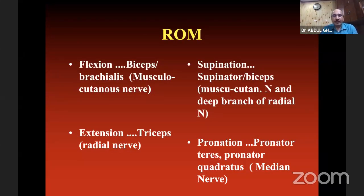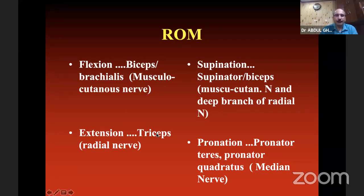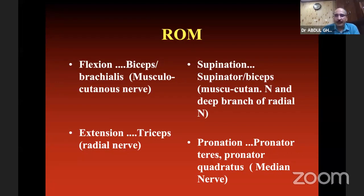You may be asked about the flexor muscles of the elbow and their nerve supply. Flexors: biceps and brachialis, nerve supply is musculocutaneous nerve. Extensors: triceps, nerve supply is radial nerve. Supination caused by supinator and biceps, nerve supply is musculocutaneous nerve and deep branch of radial nerve. Pronation by pronator teres and pronator quadratus, nerve supply is median nerve.